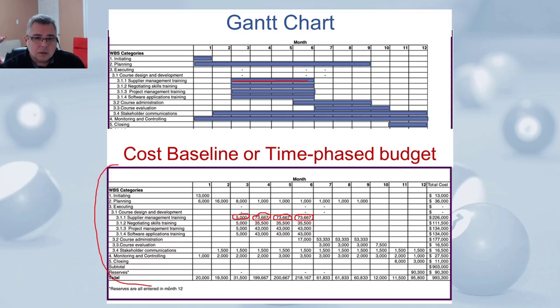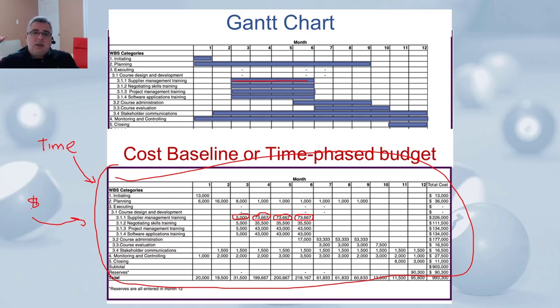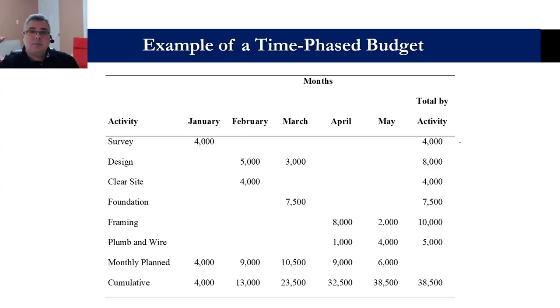So everything here represents two things, the time and the money. That's why cost baseline or time phase budget are so critical in the project planning. Because that time phase budget consolidates the time from the Gantt chart from scheduling plus the budget. Put two things together in a simple table. That's very important.